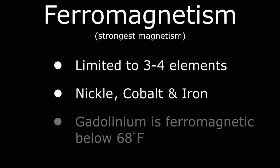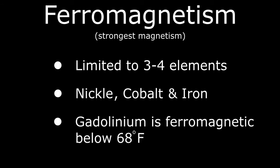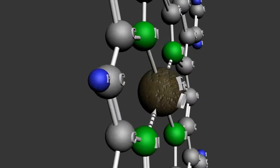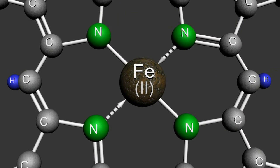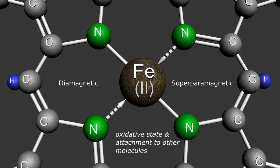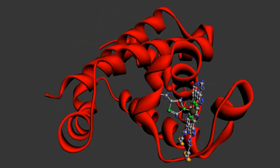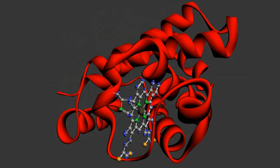Gadolinium becomes ferromagnetic below 68 degrees Fahrenheit, well below body temperature, so not really relevant to MR imaging. While iron metal is strongly ferromagnetic, the metal cation in the center of the heme molecule can range from diamagnetic to superparamagnetic depending on its oxidative state and attachment to other molecules. This changing local environment of the hemoglobin molecule is the key to the varying T1 and T2 signals seen in an aging thrombus. Now we're ready to talk about some hematomas.